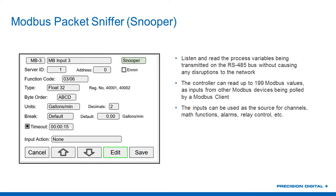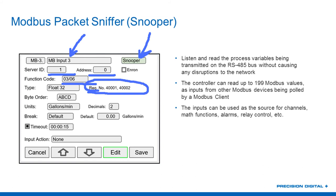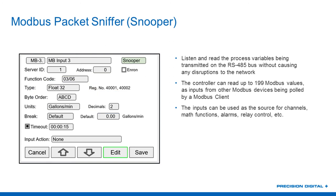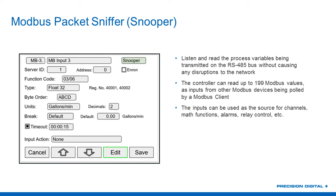How do you program snooper mode? Much like client mode — you give it a name, set it up for snooper mode input, give it the Modbus ID of the device you want to listen to responses from, give it the function code and register address. Just like before, it's a lookup on the device. In this case, whenever it hears Modbus address device 1 respond with register number 40,001, it knows that's what it's looking for — it didn't request that information, some other master did, but that's what it wants to treat as an input.